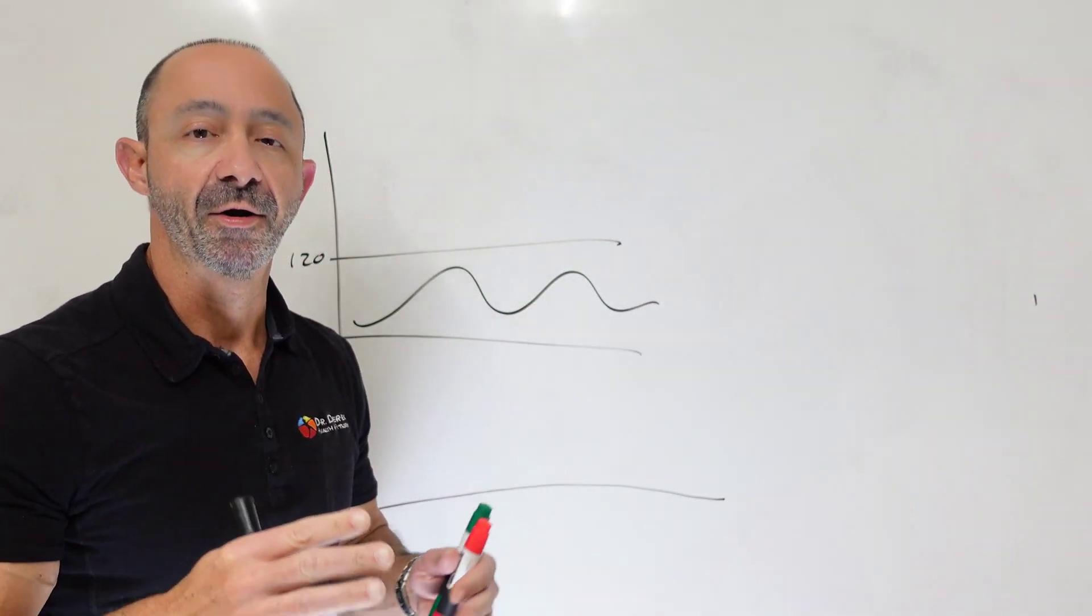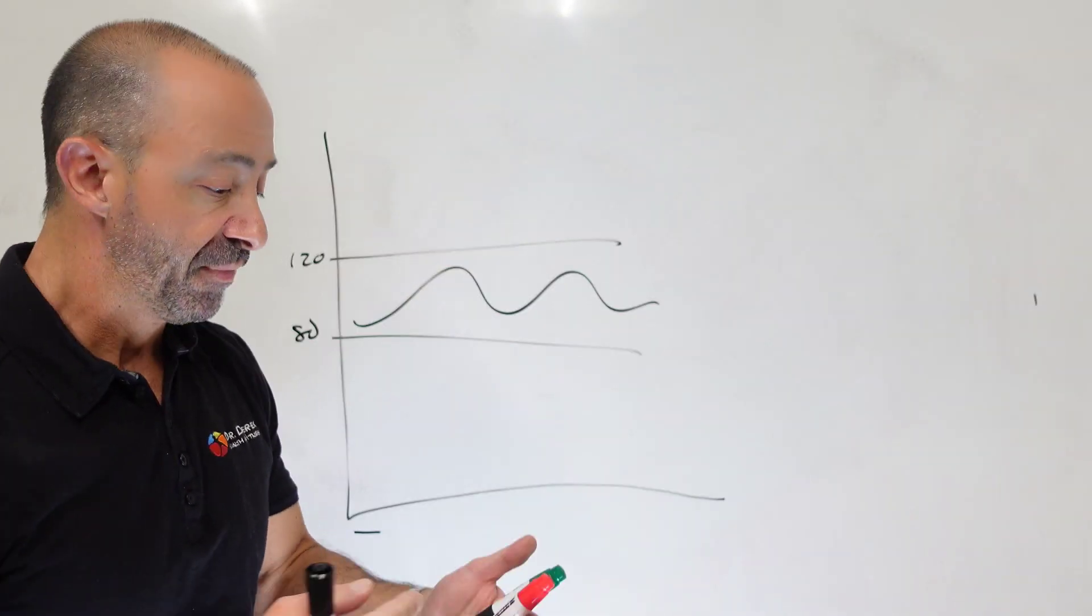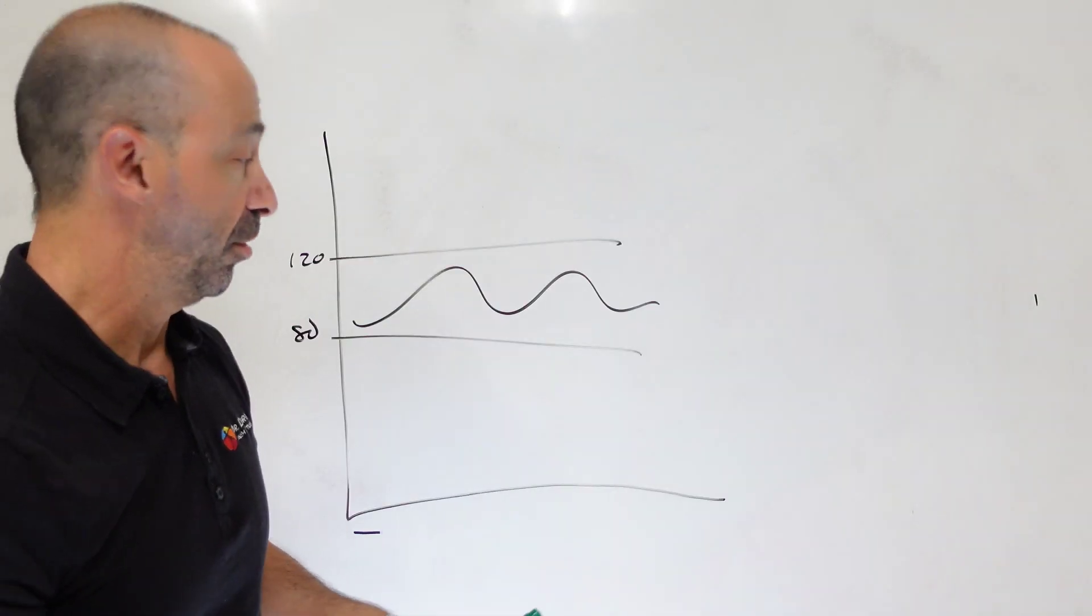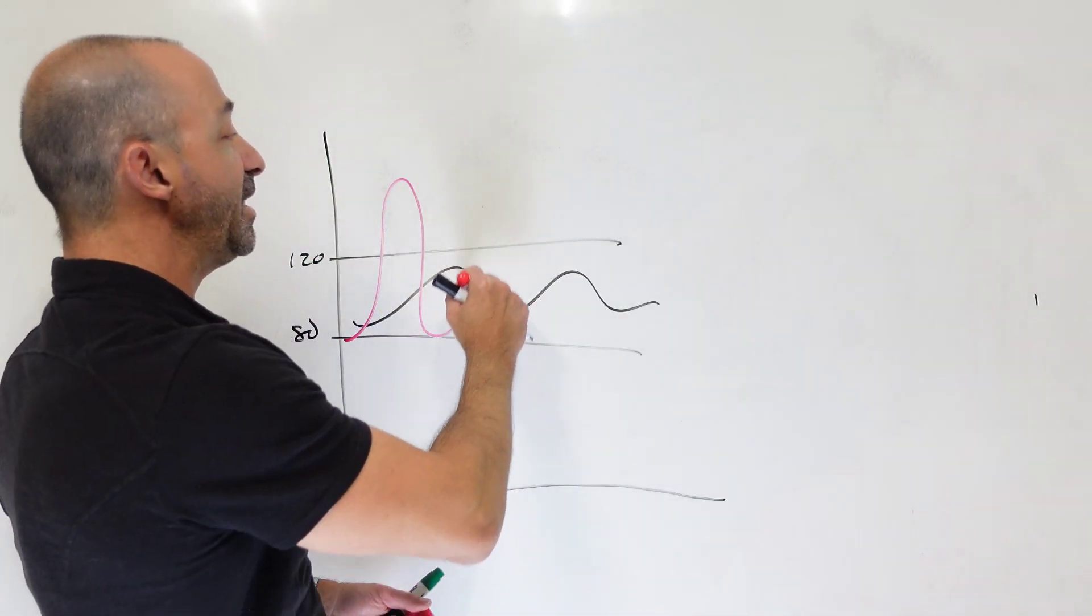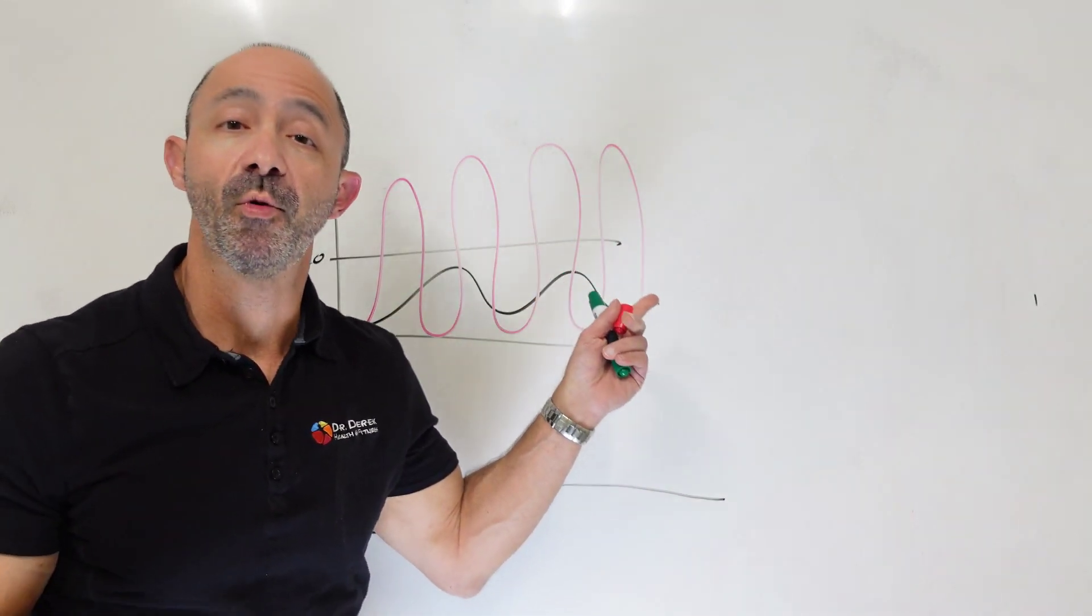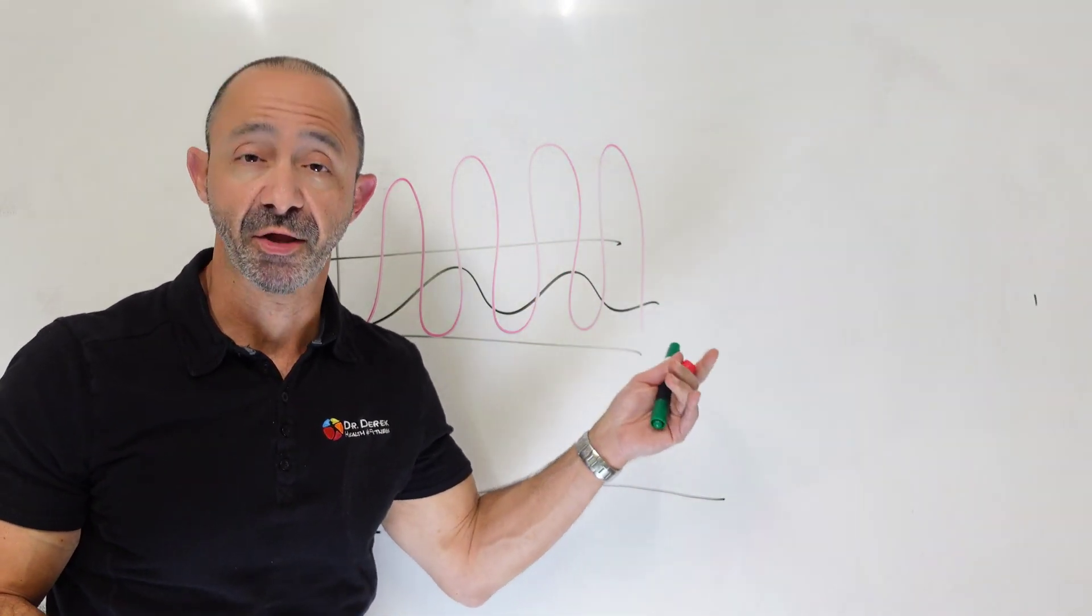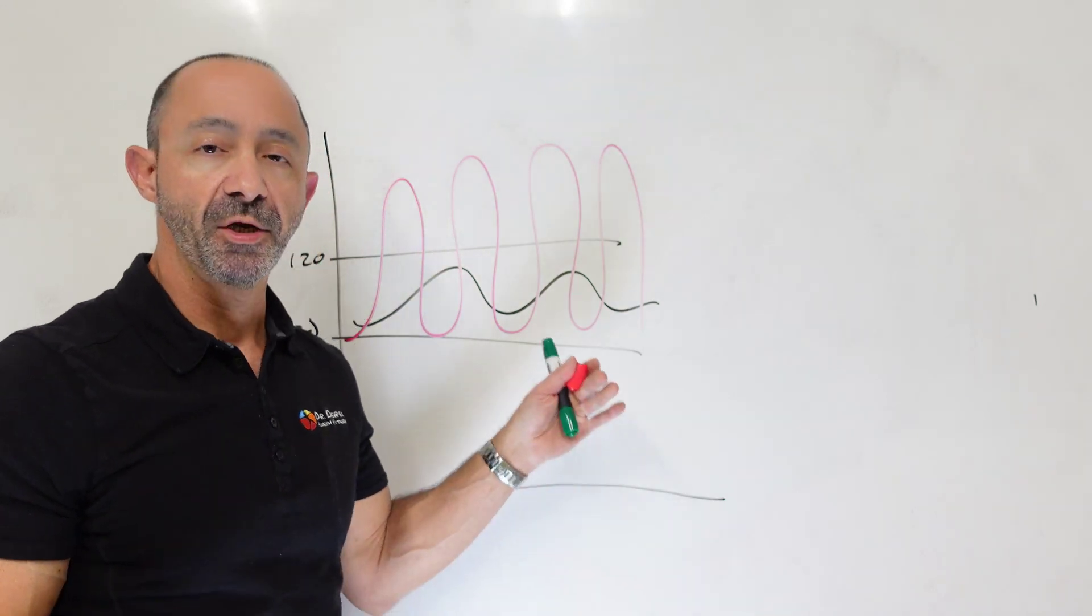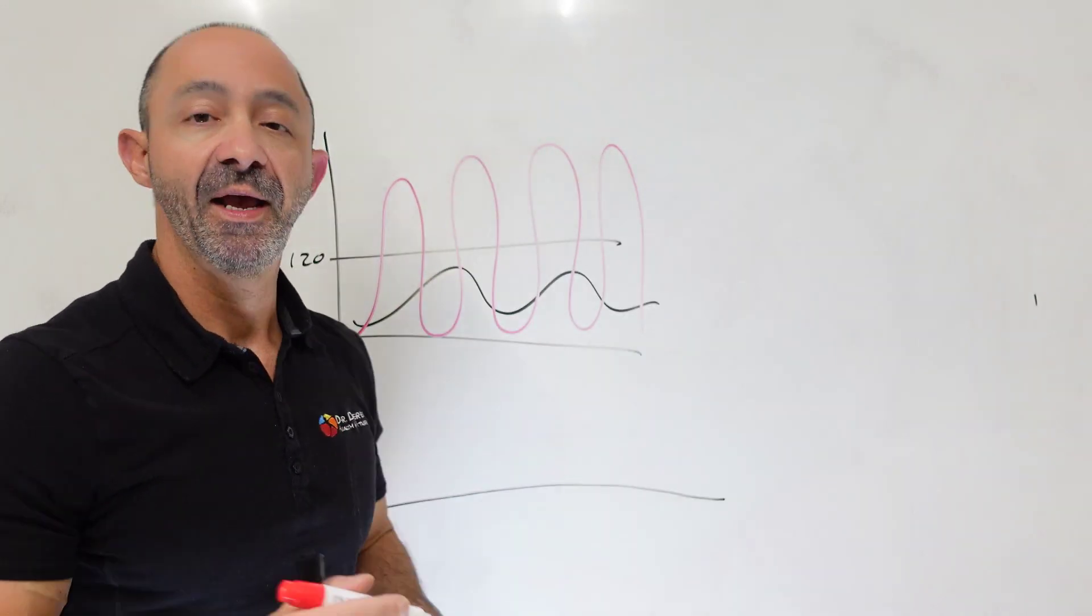The smaller the range, the better health and the better energy you're going to have. Now, the danger occurs when we eat in a way in which we have many frequent high blood sugar spikes throughout the day. So whenever blood sugar is being elevated, it can cause a problem.